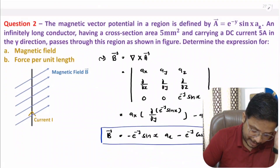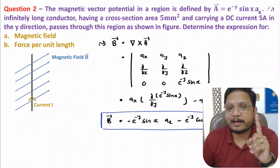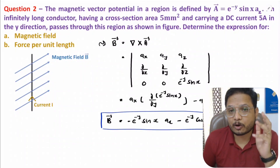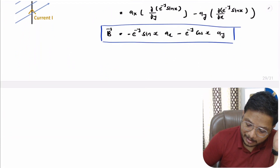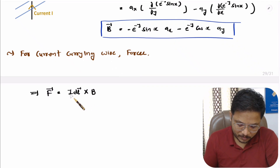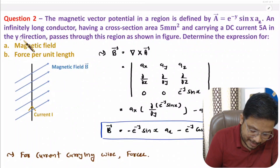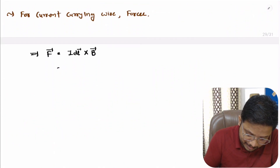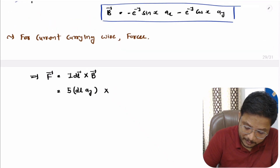Now for the second part, we need the expression for force per unit length. The force acting on a wire carrying current I is F = I dl × B. Here the current is 5 amperes and it flows in the y-direction, so I dl = 5 dl â_y. We then take the cross product of this with the magnetic field B that we calculated.